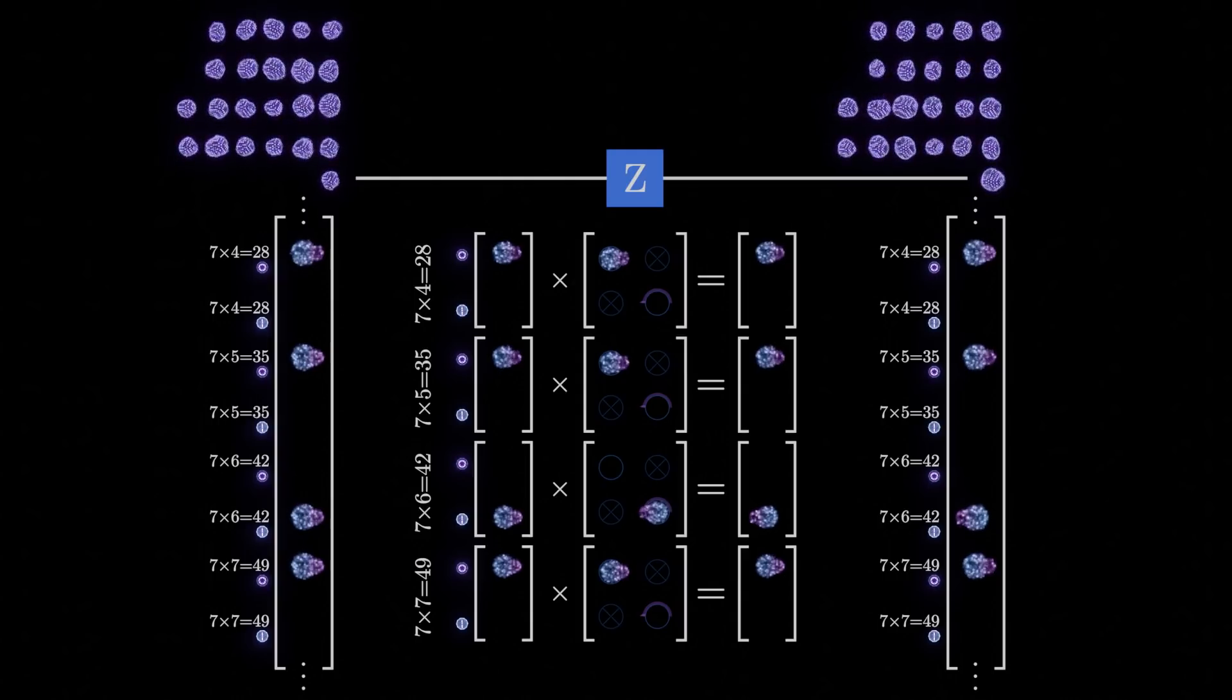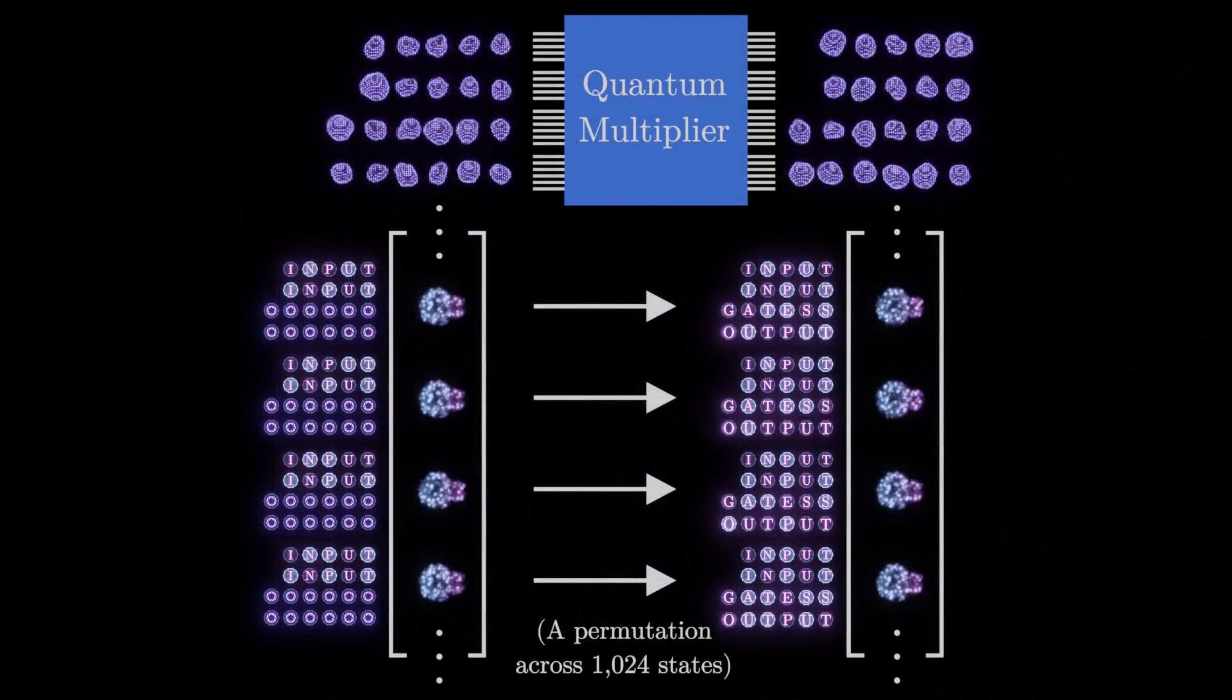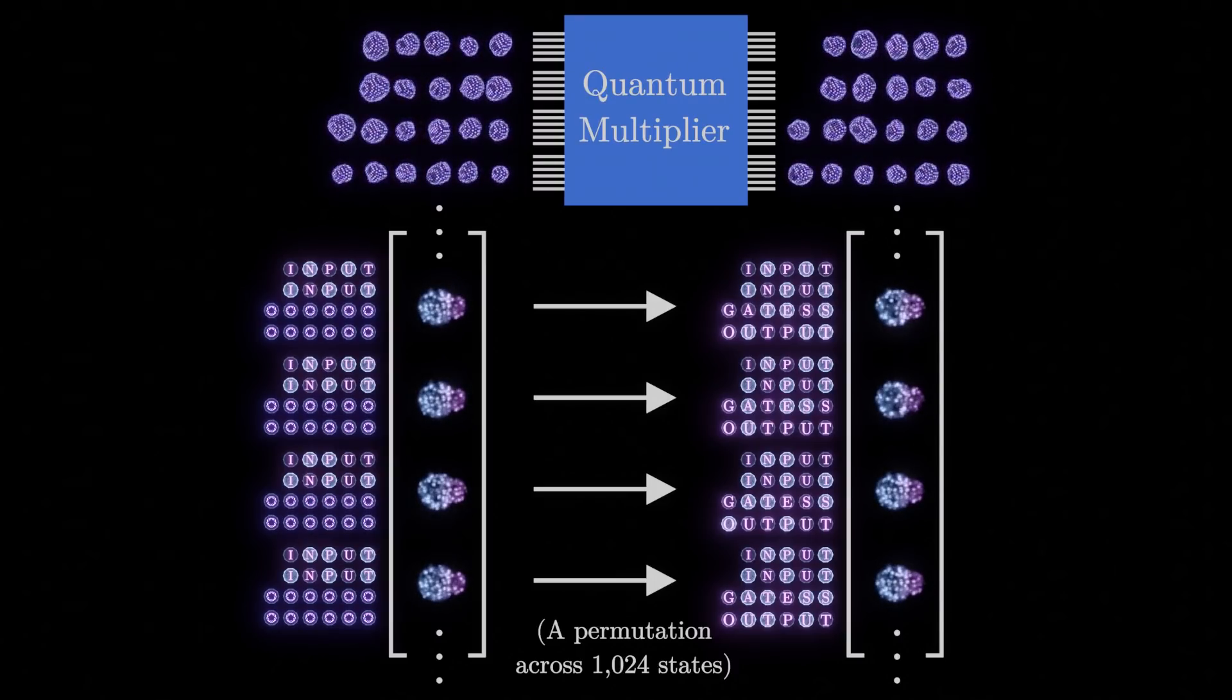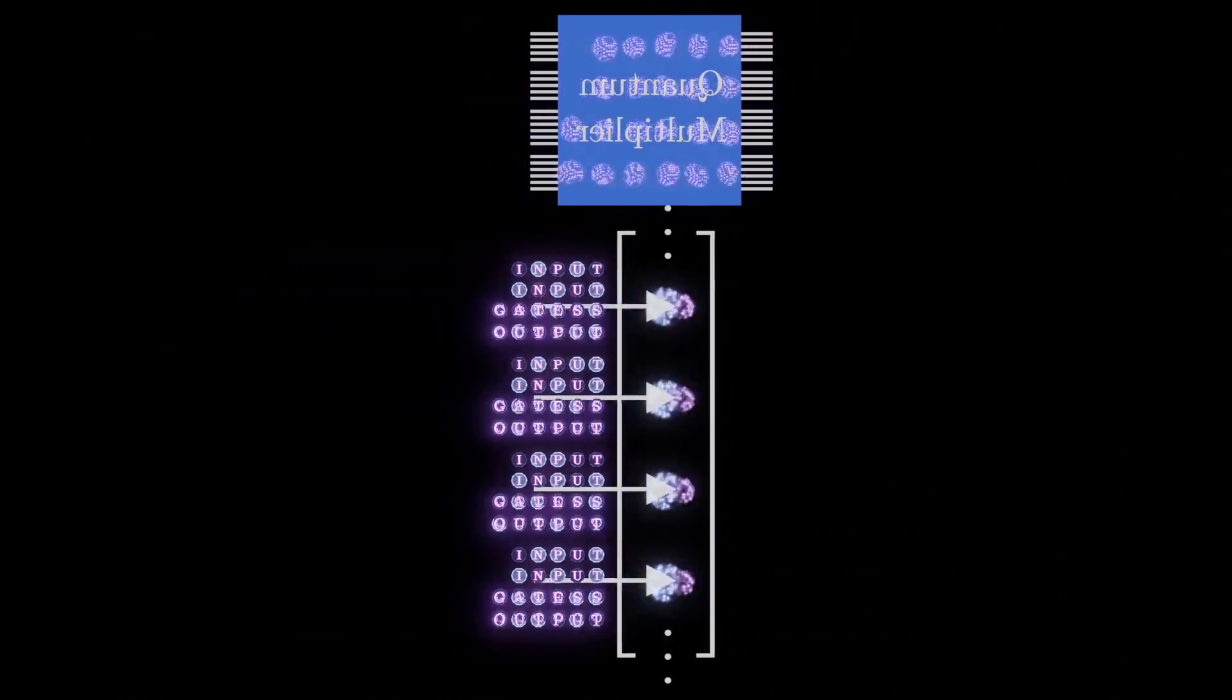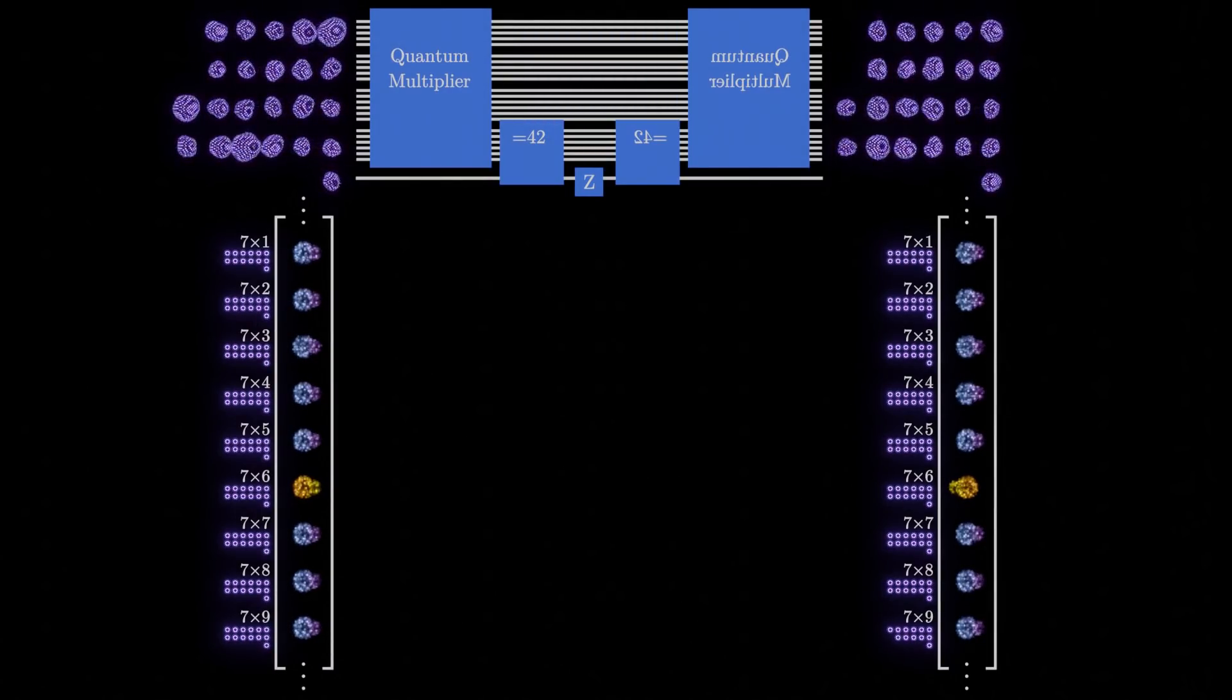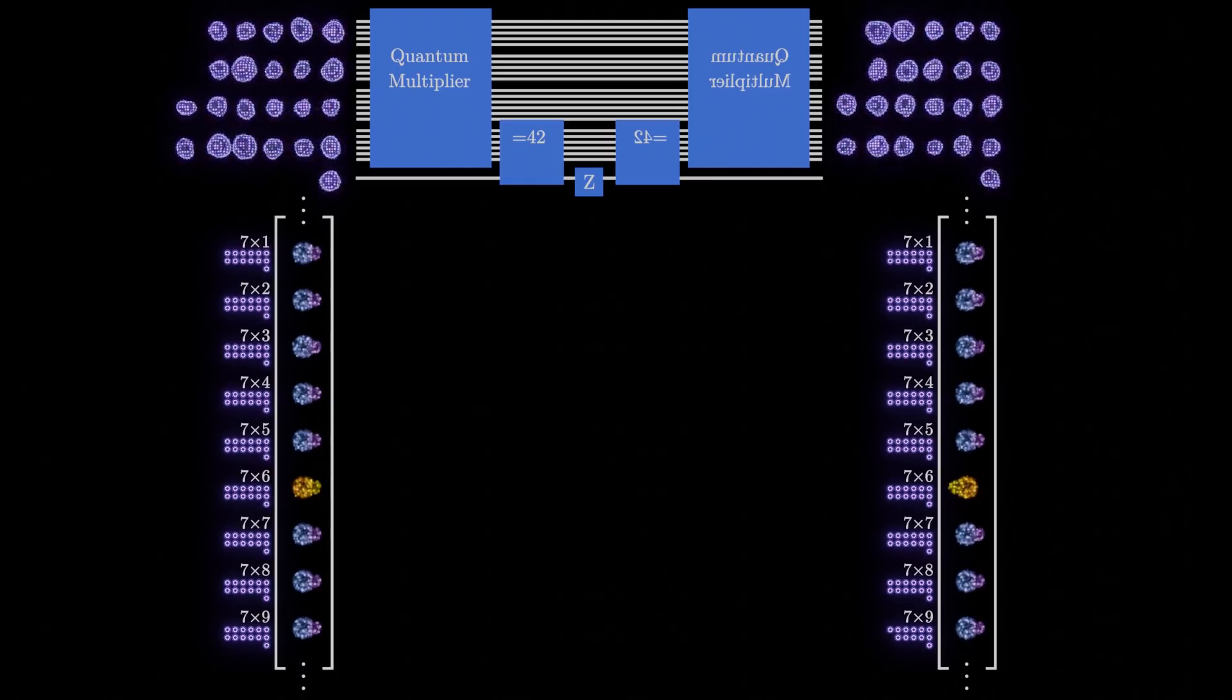We now need to disentangle the qubits representing the inputs from the qubits representing the intermediate results of each logic gate. Remember that applying our quantum multiplication circuit at the start effectively permutated a state vector where all possible inputs have some probability to make a state vector where all possible inputs and their corresponding effects on classical logic gates are equally likely. If we apply this circuit in reverse, this permutation is undone. Because of this, if we apply our reverse circuit after the Z gate, we end up with a state vector where the only likely states are ones where all additional qubits are 0, just like we started with. Since our circuit is just a permutation, the phases of the states we are interested in are still flipped.